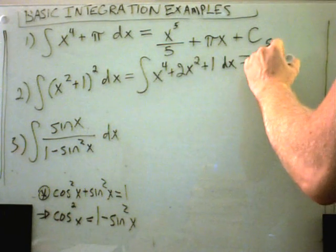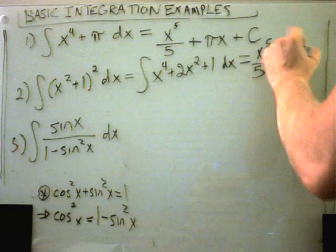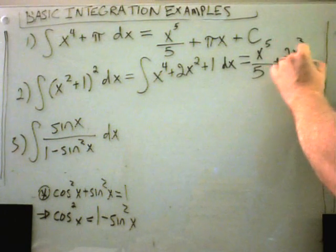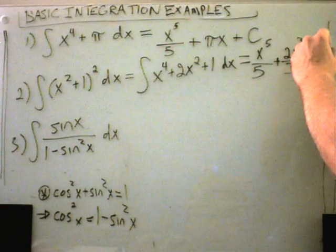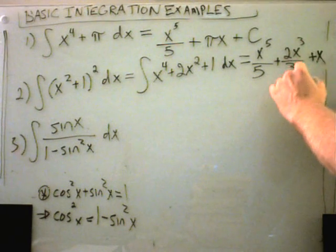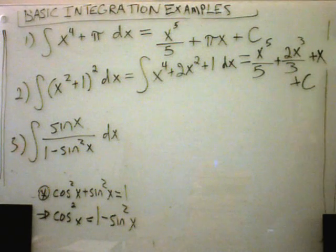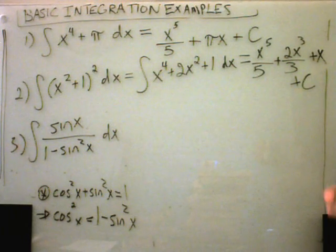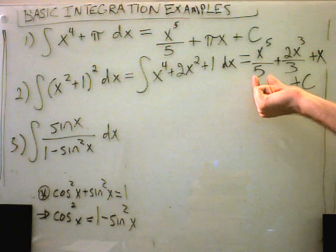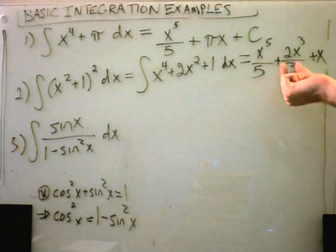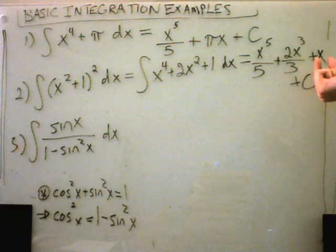Just like when you take derivatives, the constant comes along for the ride. We'll get two x to the third over three. The antiderivative of one will be plus x. And then again we just tag on our plus C. So the antiderivative will be x to the fifth divided by five, plus two-thirds x cubed, plus x to the first, plus C.